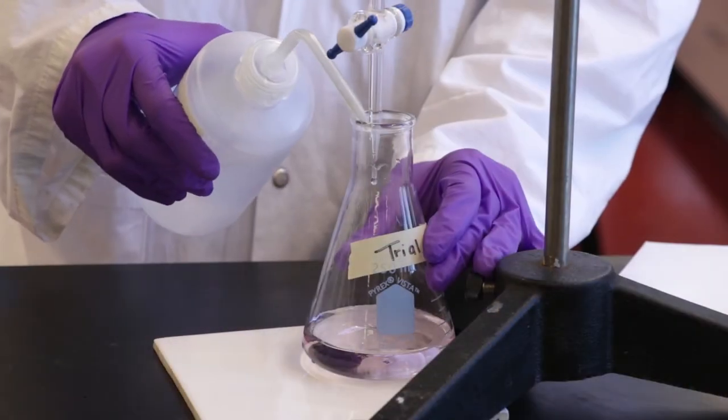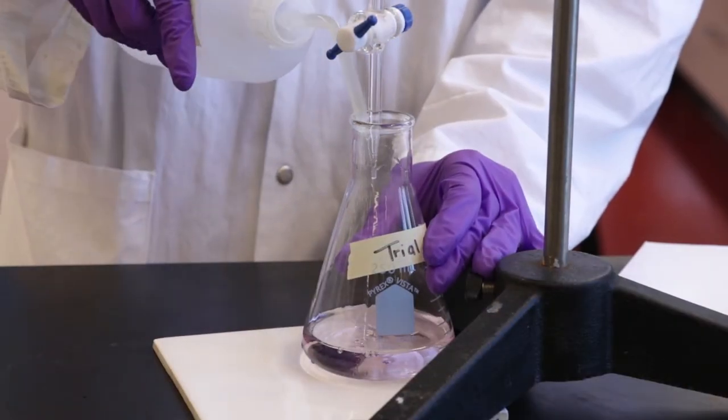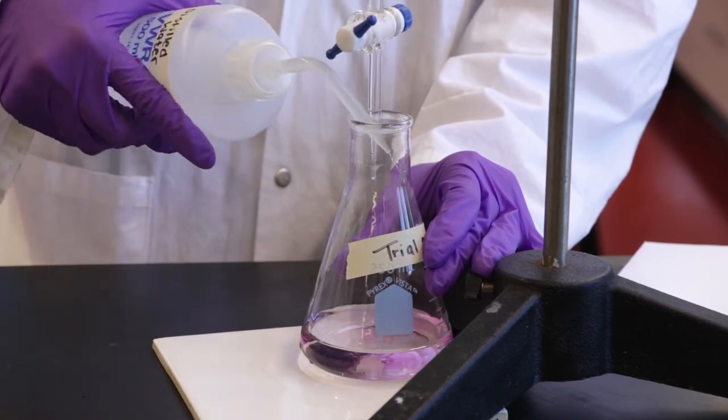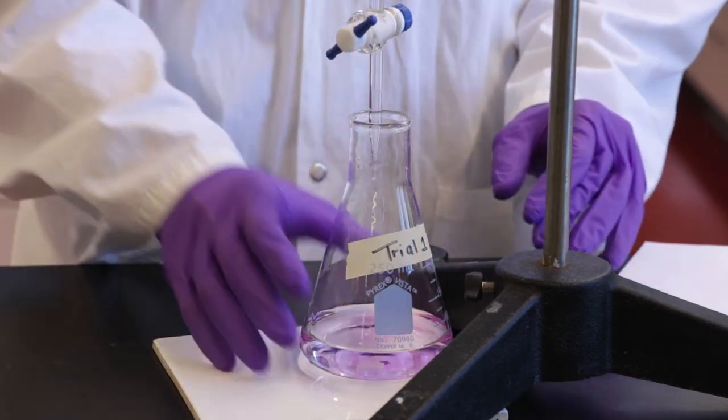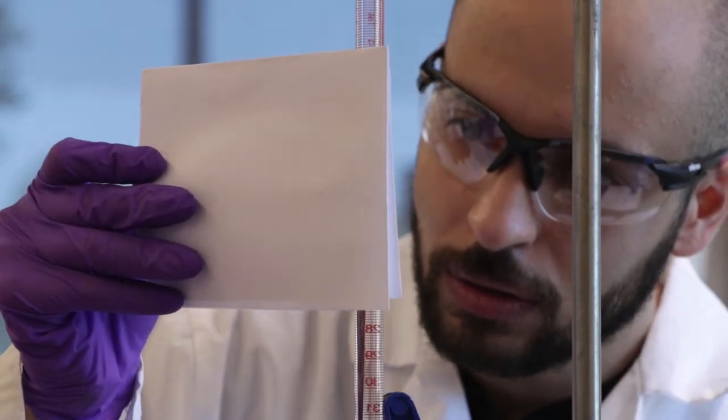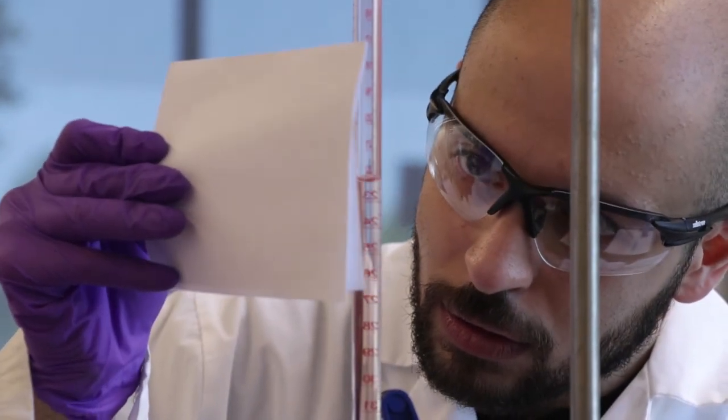The equivalence point is the point at which the number of moles of acid and base are equal, but it is important to note that the endpoint and the equivalence point are not the same, since an excess amount of base is required to react with the indicator in order to generate the color change. For any titration, the indicator must be carefully chosen so that the equivalence point and endpoint are as close as possible.